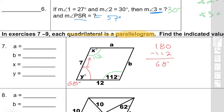And one last thing: because it is a parallelogram, opposite sides are congruent. So if this side down here is 12, then a is also 12. And if this side there is 7, the opposite side to that would also be 7, which is b.